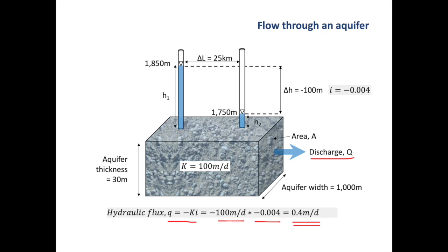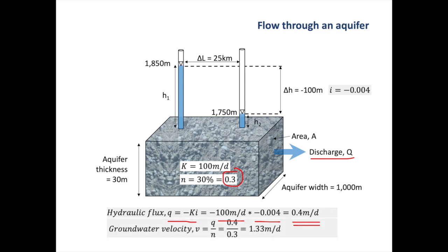Remember that the hydraulic flux is the discharge flowing perpendicular to the cross-sectional area divided by the cross-sectional area — it's not the same as the groundwater velocity. To calculate the groundwater velocity, we also need to know the porosity, or more correctly, the effective porosity of the aquifer. In this case it's 0.3, and our formula is the hydraulic flux divided by the porosity: 0.4 divided by 0.3, and we end up with 1.33 meters per day. This is quite typical of the speeds at which groundwater moves through aquifers. Remember that groundwater flows very slowly, unlike surface water.